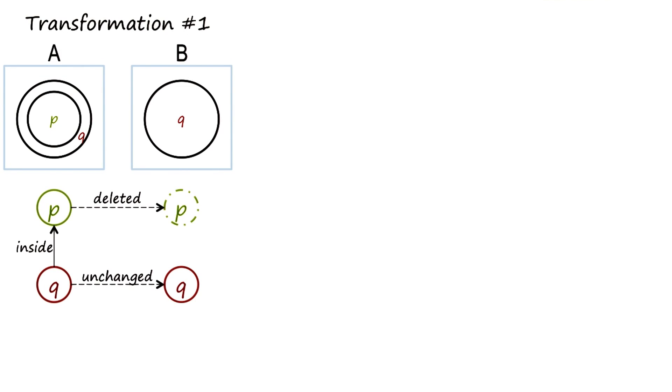So let us look at the semantic network representation of the relationship between A and B. In one view of the transformation from A to B, we can think of Q, the outer circle, as remaining unchanged, and P, the inner circle, as getting deleted.